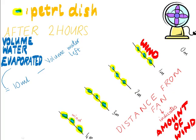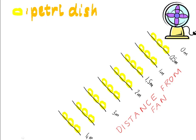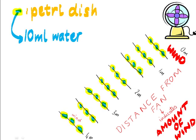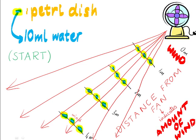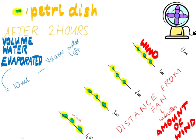What limitations can you think of in the investigation where we looked at the effect of amount of wind on evaporation rate? Remember, we put Petri dishes at various distances from the fan and that indicated to us the amount of wind. The closer ones had more wind, the further ones less wind. We first put 10 milliliters of water into each Petri dish, left it for about 2 hours or something, and then calculated the change in water volume. In other words, how much water evaporated. What limitations are there in this investigation?